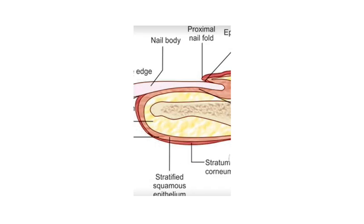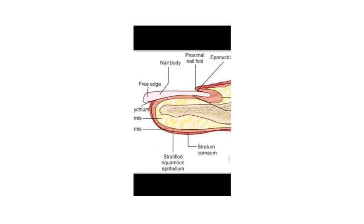The continuation of the germinal matrix underneath the nail plate around this region is known as the sterile matrix because it does not give rise to any form of the nail. This is the distal phalanx.